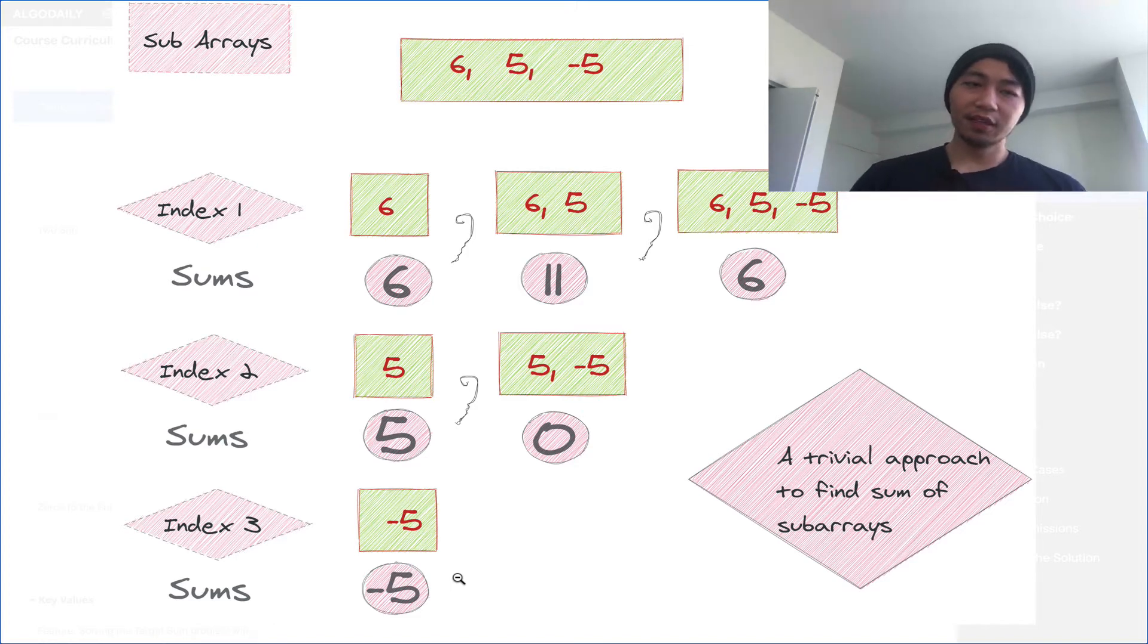You can see that the runtime complexity is going to be O of n squared because we have to iterate through the first level, which is each element in the array. And then we have to iterate through another level, which is each potential subarray following that element.